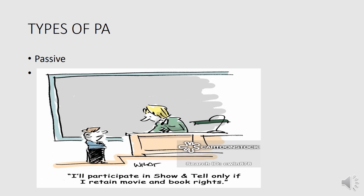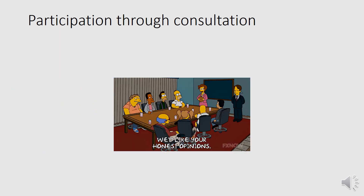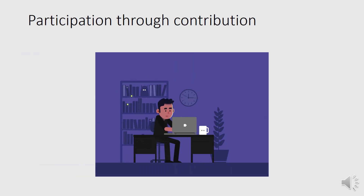There are several types of participatory approaches. First is passive participation — the community participates by simply being told about things to be done. Second is participation through consultation — the community is consulted about what should be done and may discuss options proposed by professionals, but the latter are not obliged to take the community's views into account. Third is participation through contribution — the community is asked to provide labor or financial contribution, but is not given choice over options.